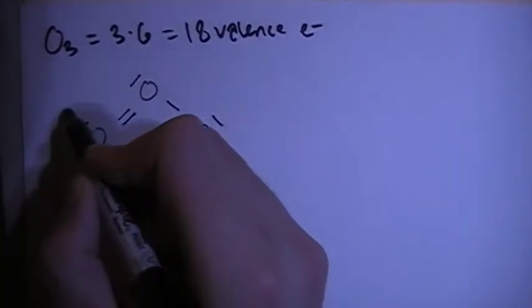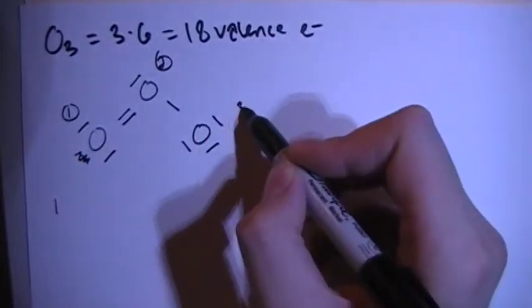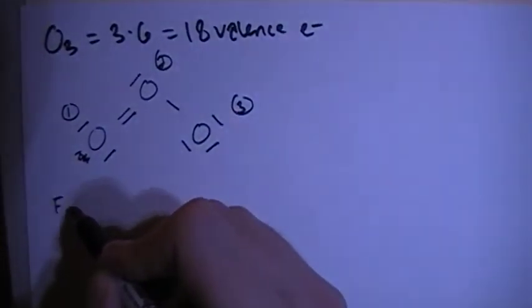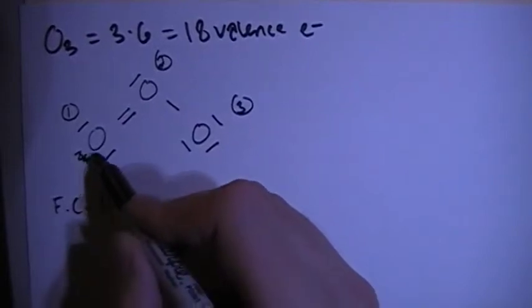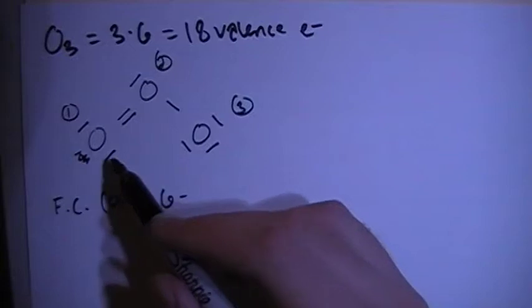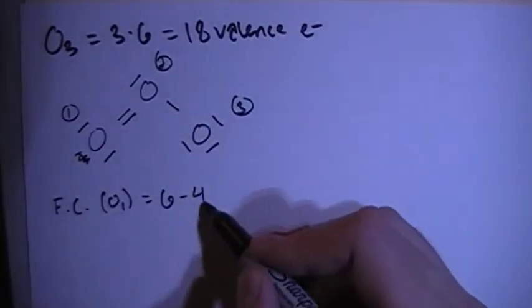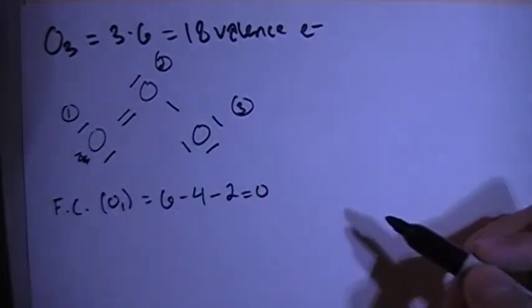So, let's call this oxygen 1, this one oxygen 2, and this one oxygen 3. The formal charge of oxygen 1, this one here, is 6 valence brought in, minus 4 non-bonding electrons, minus 2 bonds, which gives us a formal charge of 0.